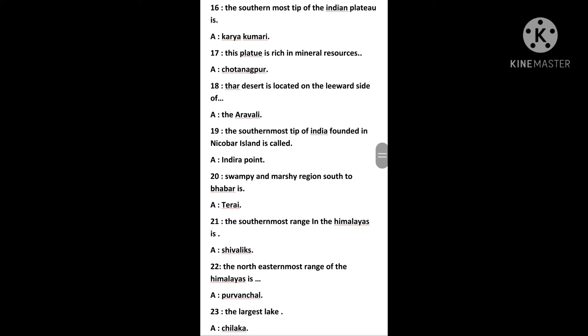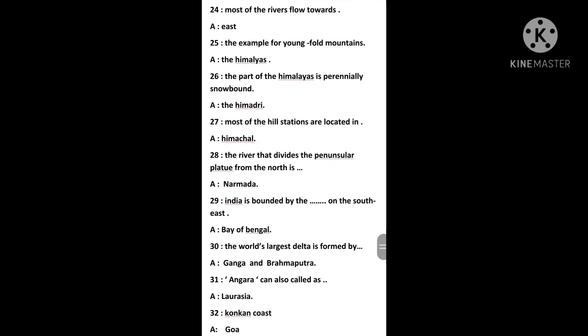The swampy and marshy region south of Bhabar is Terai. The southernmost ridge in the Himalayas is Shivalik. The northeastern range of the Himalayas is Purvanchal. The largest lake is Chilika Lake. Most of the rivers flow towards the east. The Himalayas are an example of Fold Mountains. The part of the Himalayas that is perennially snow-bound is the Himadri.